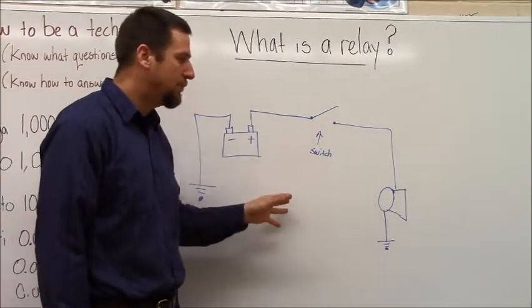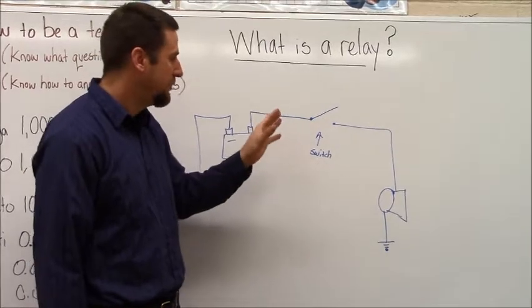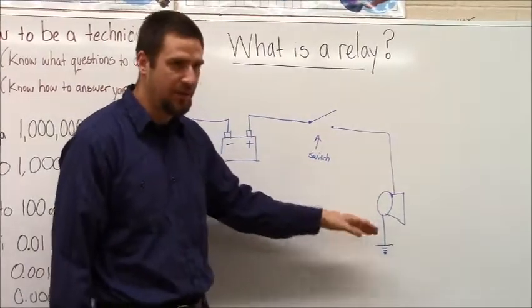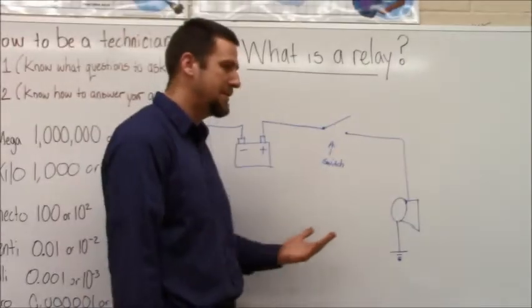What we use relays for is to control a high current. In this case, the horn is going to be a high current with a low current. Why do we need to do this?